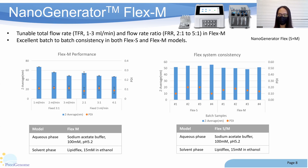Second, the nanoparticle product generated by FLEX-M has excellent homogeneity. PDI, or polydispersity index, is an indicator of homogeneity of nanoparticles. When PDI is lower than 0.2, the particle suspension is considered homogeneous with uniform sizes. Another feature of the Nanogenerator FLEX-M system is excellent reproducibility. The figure on the right-hand side shows the batch-to-batch consistency of the FLEX-M system — using the same formulation and parameters, you may prepare lipid nanoparticles with repeatable size and PDI values.